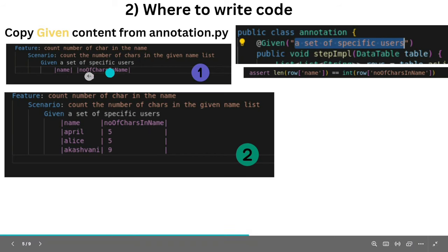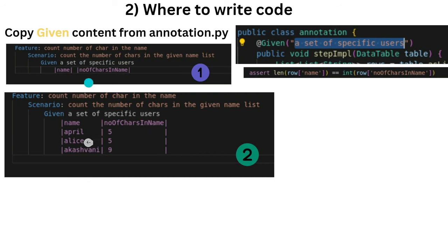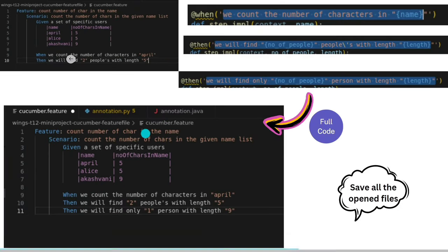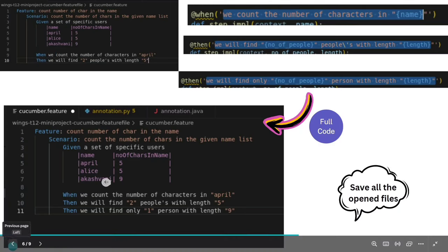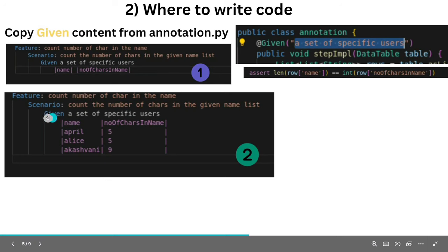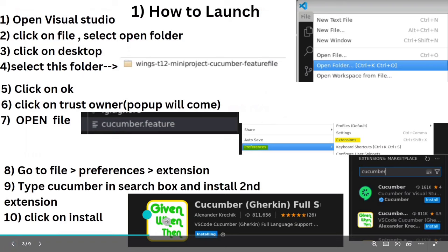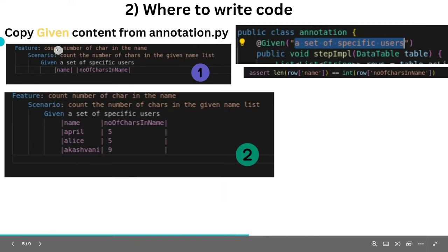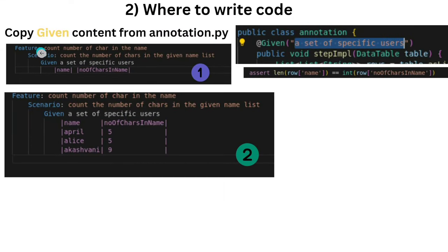Write these two lines of code as shown. Now, remember we installed the 'Given When Then' extension — you need to write Given, When, and Then very carefully. Feature and Scenario lines you can copy, but Given, When, and Then we will discuss carefully. Just type 'gi' and the extension will auto-suggest.